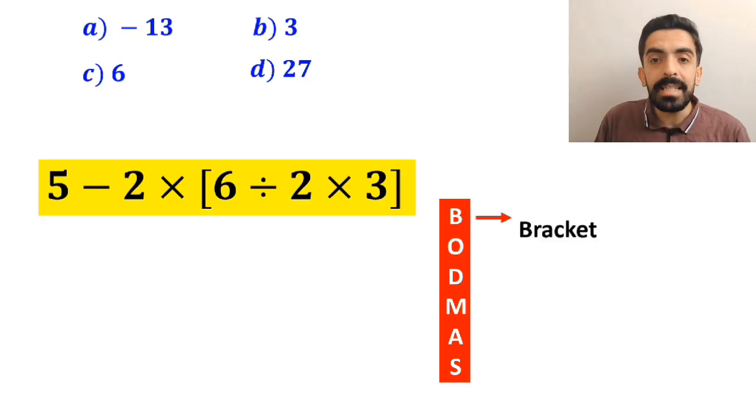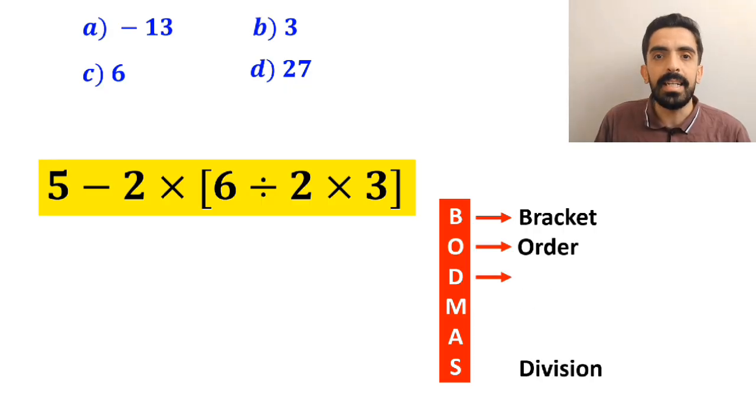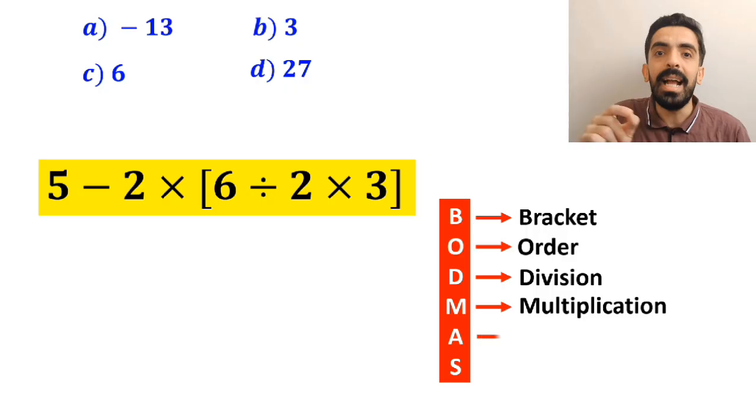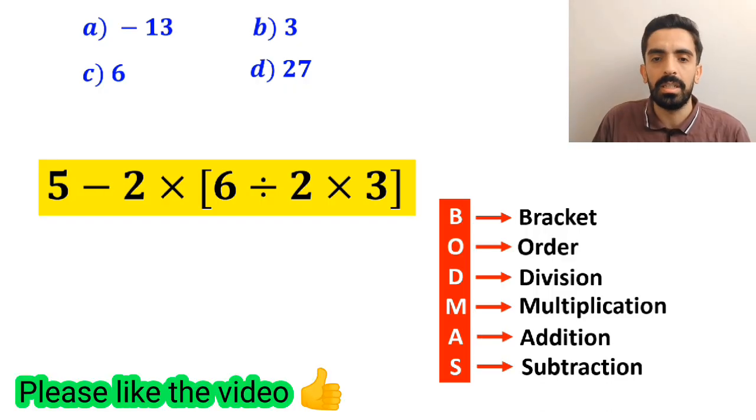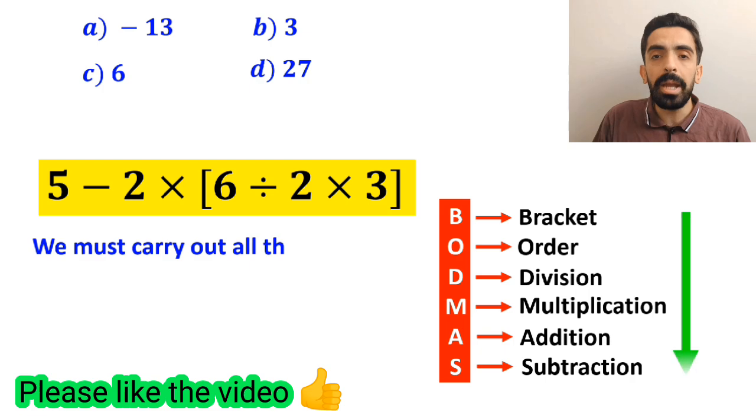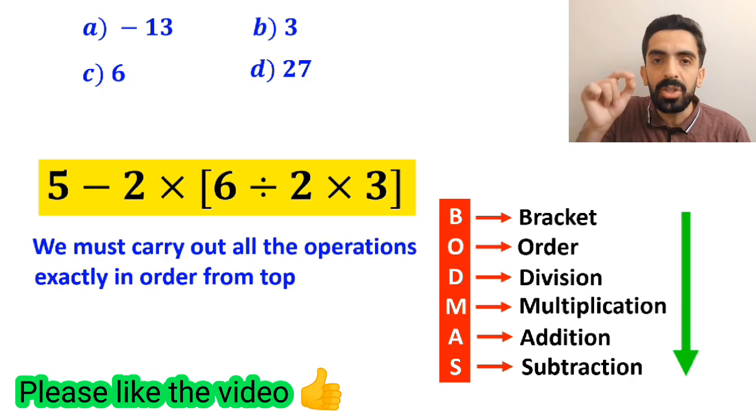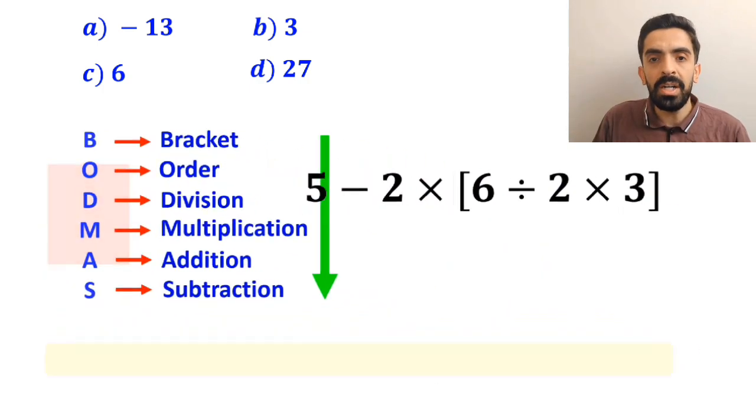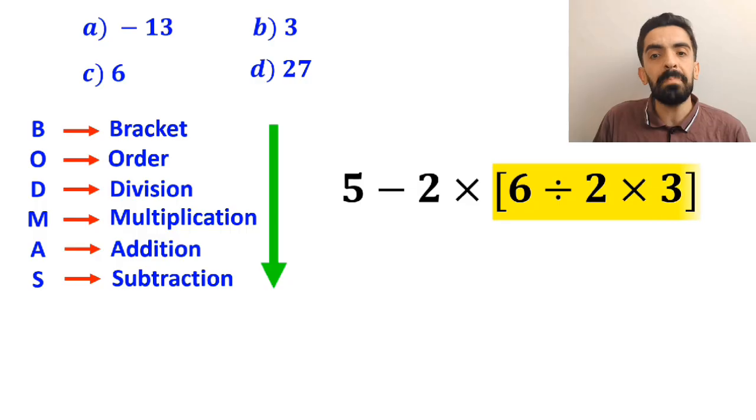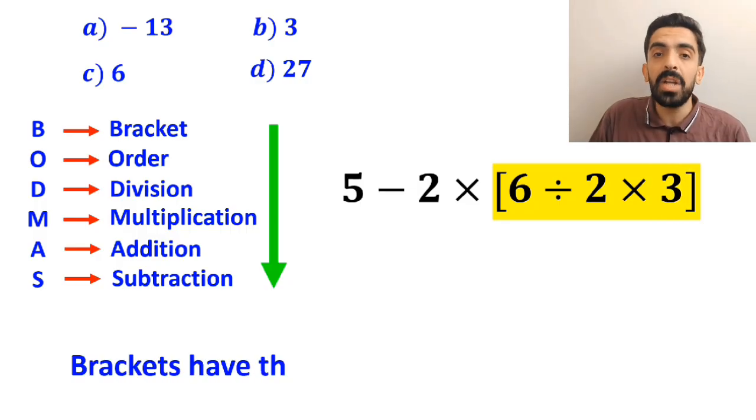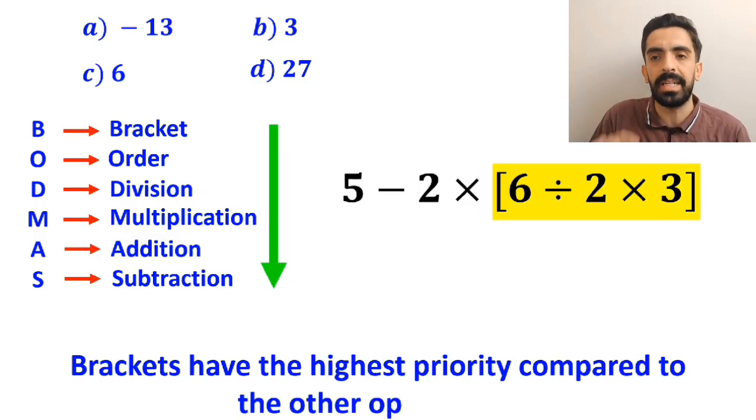In this rule, B stands for bracket, O stands for order, D stands for division, M stands for multiplication, A stands for addition, and S stands for subtraction. We must carry out all the operations exactly in order from top to bottom. First, we'll start with the expression inside the brackets, because brackets have the highest priority compared to the other operations.